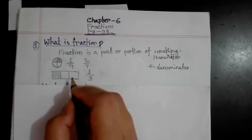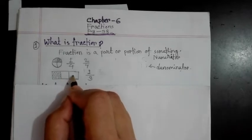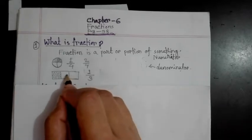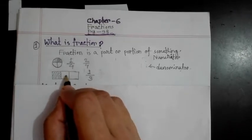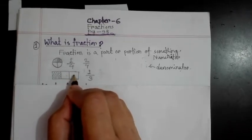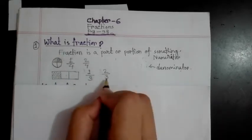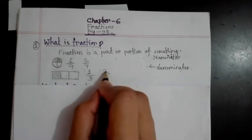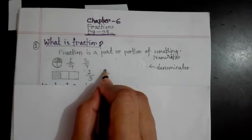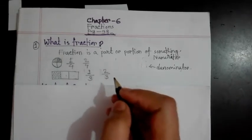This is one by three. And how much will your other two brothers get in total? The other two brothers will get this portion and this portion — so that is two portions. So we write here two by three. That means out of three portions, the other two brothers will get two portions. This way we can write a fraction.